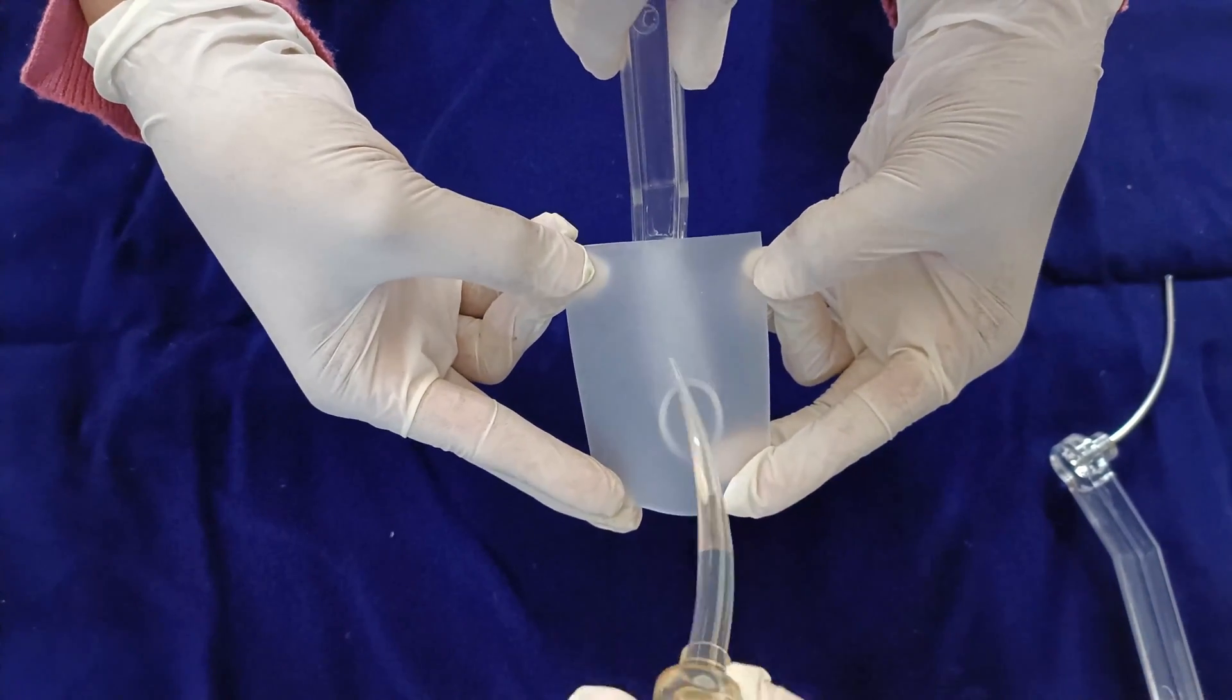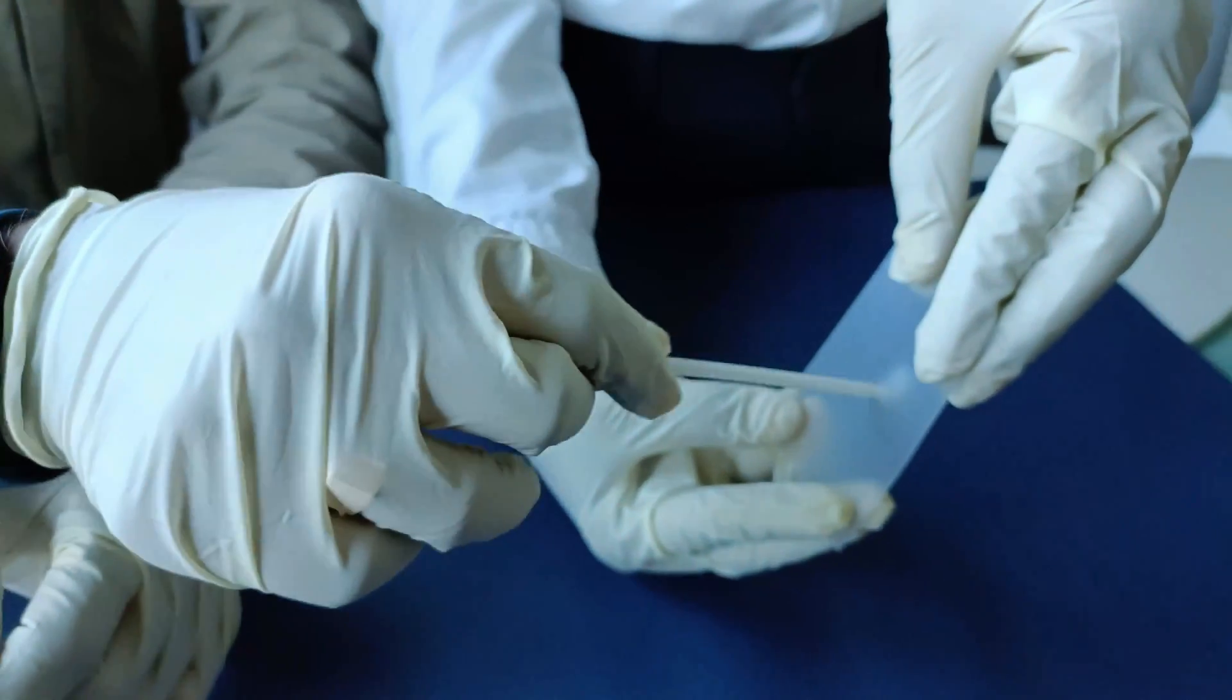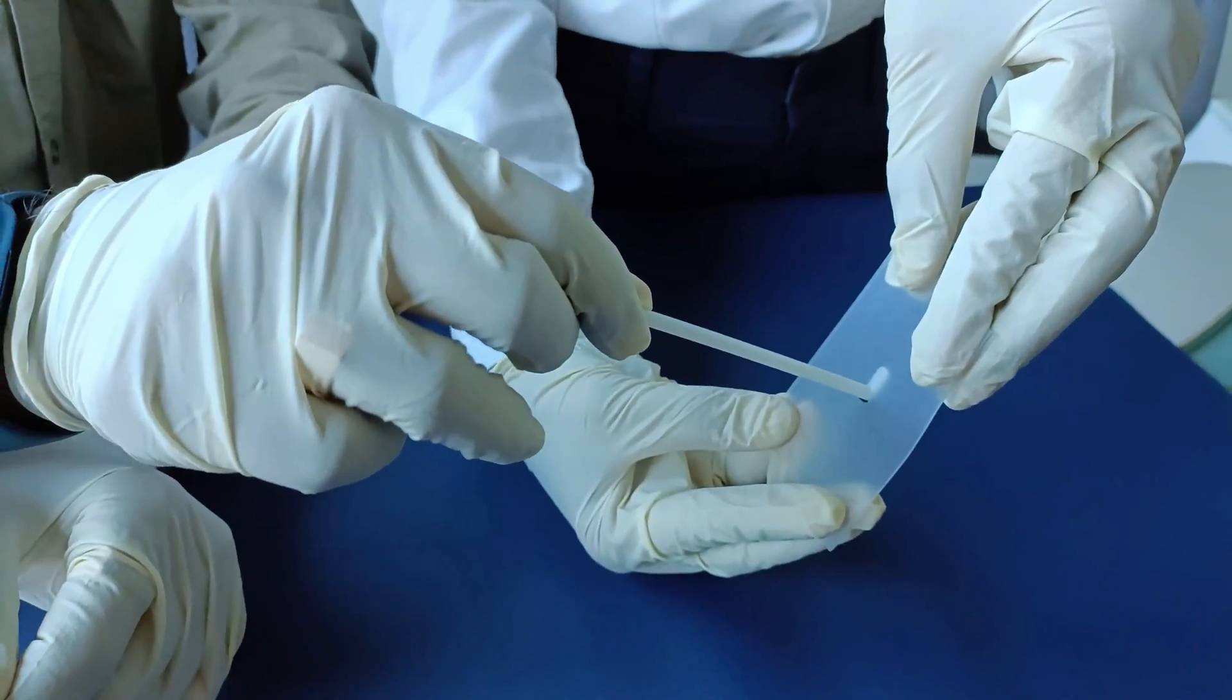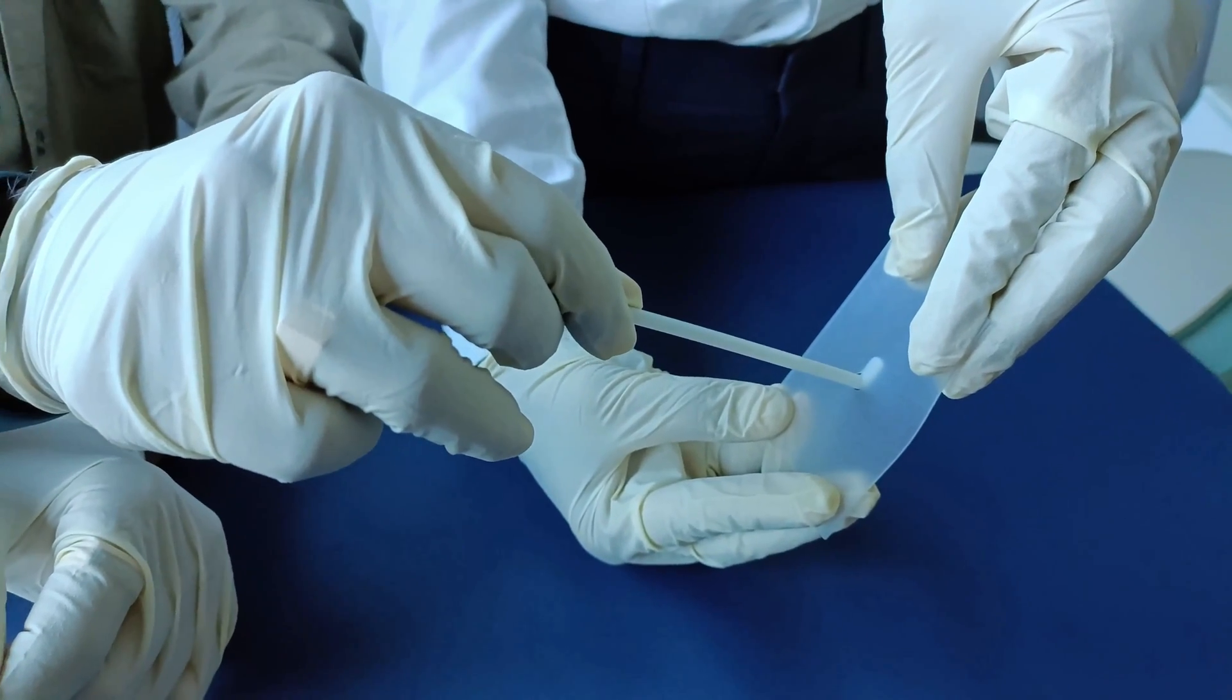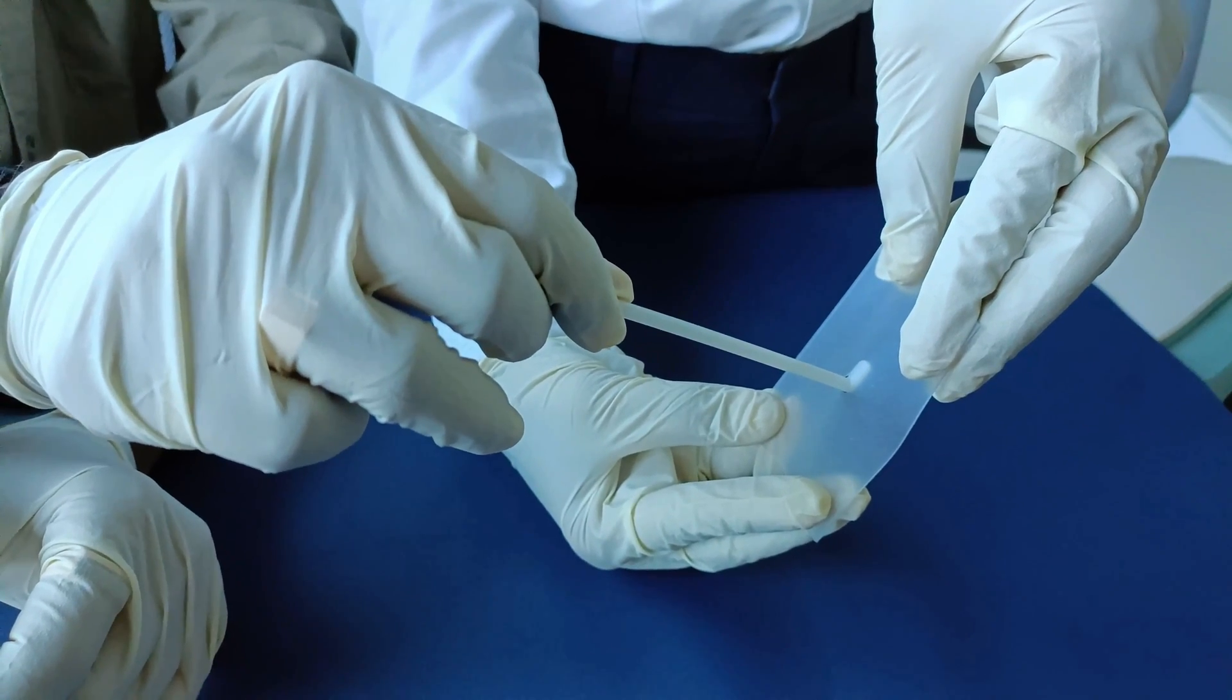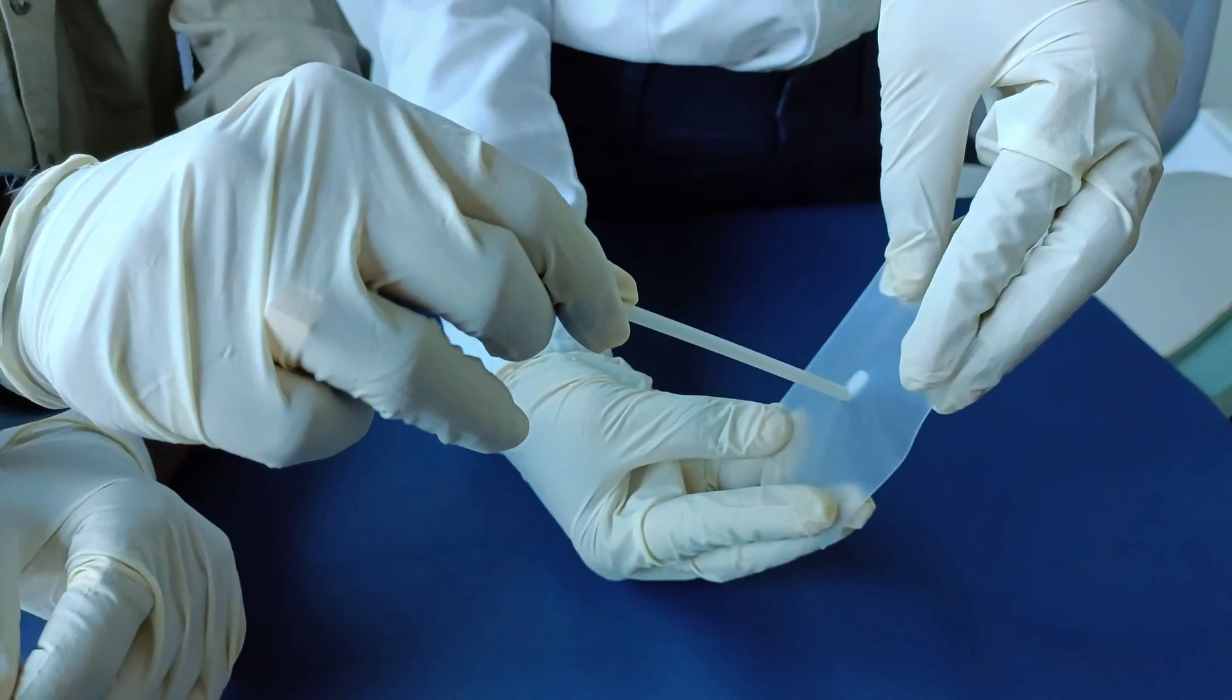For identifying the perfect size of voice prosthesis amongst the available length options of 4mm, 6mm, 8mm, 10mm, insert the sizer in the puncture area up to the esophagus wall and mark the distance with the help of blue, green, yellow and red colored bands for measuring the distance between trachea and esophagus. This will help you to identify the right size of the voice prosthesis that needs to be implanted.